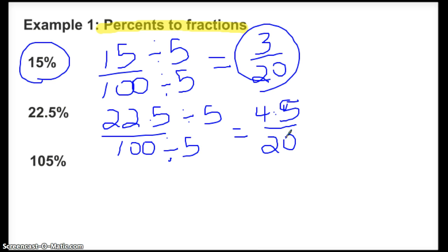But, oh look, I can still divide by 5. I can divide my 4.5 by 5, and I can divide my 20 by 5. So that tells me that I could have divided the whole thing by 25 to begin with. 4.5 divided by 5 is 0.9, and then 20 divided by 5 is 4. So that's how you find that.